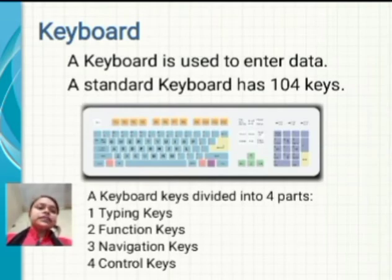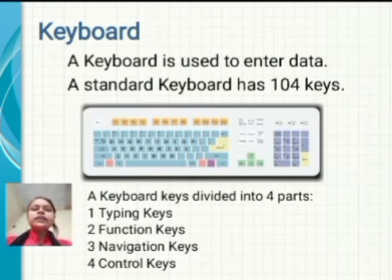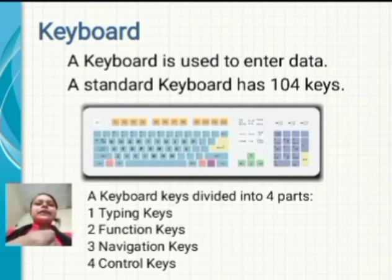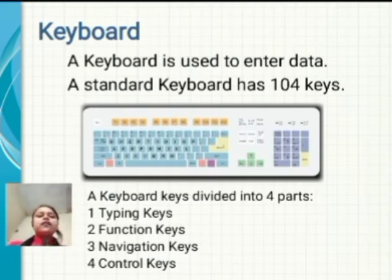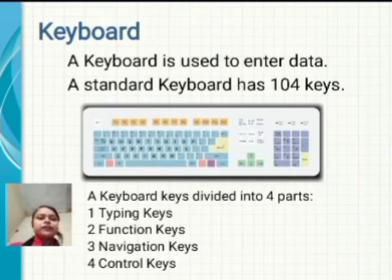A keyboard is divided into four parts. First, typing keys — typing keys contain alphabet and numeric keys. Next, function keys — function keys contain F1 to F12 keys.